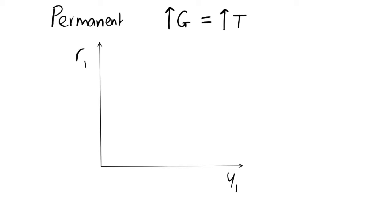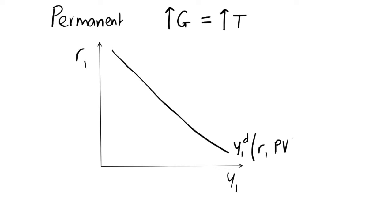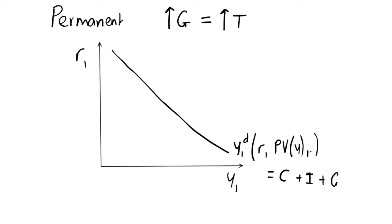Let's draw our aggregate supply and aggregate demand curves. We know that our aggregate demand slopes downwards — we'll call this Y1D. This curve depends on the interest rate, which is on the Y axis, and on the present value of income of consumers. We can also write this aggregate demand relation as consumption plus investment plus government spending — all subscripted by one because we're looking at aggregate demand in period one: C1 + I1 + G1.